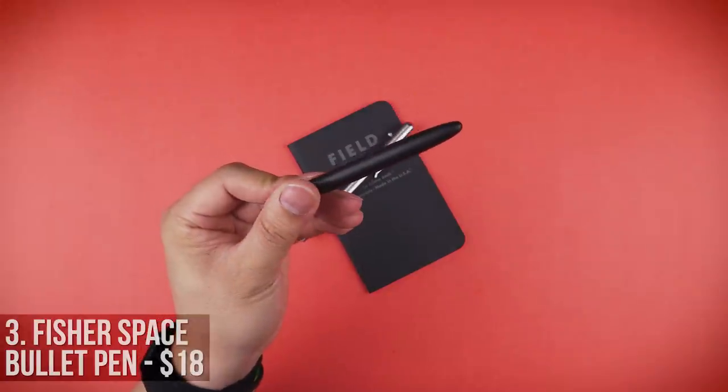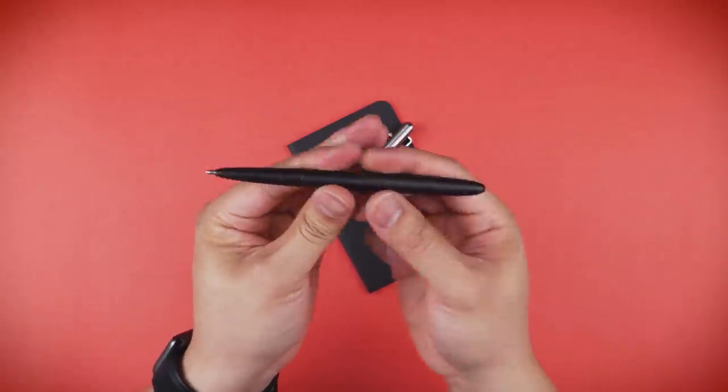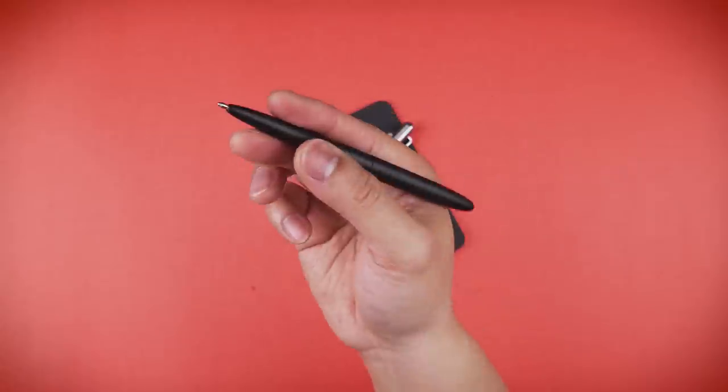For those who want something on the smaller side and blacked out, the Fisher Space bullet pen is the answer to all your life's problems. Well, most of them at least. Uncapped, it doubles the length of the pen giving it a full-size pen feel.